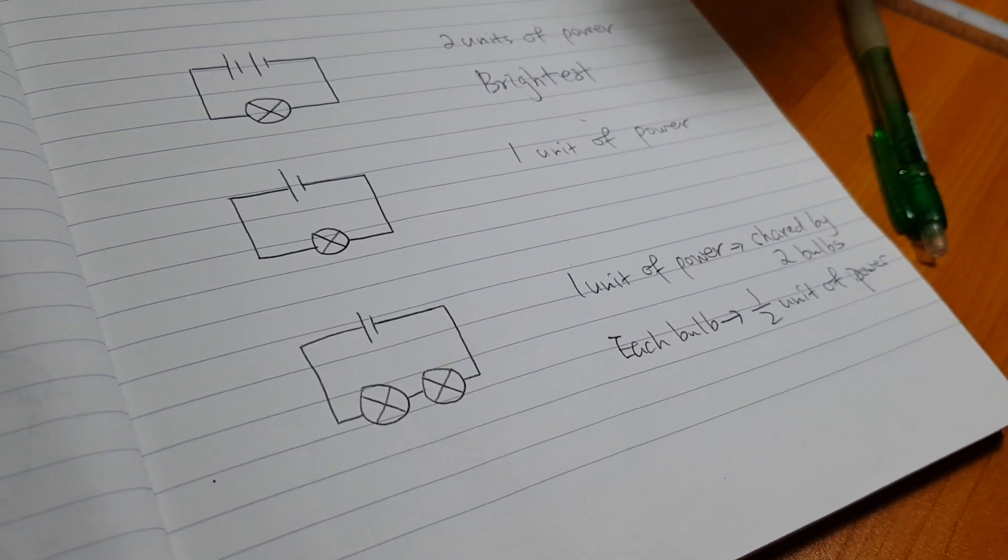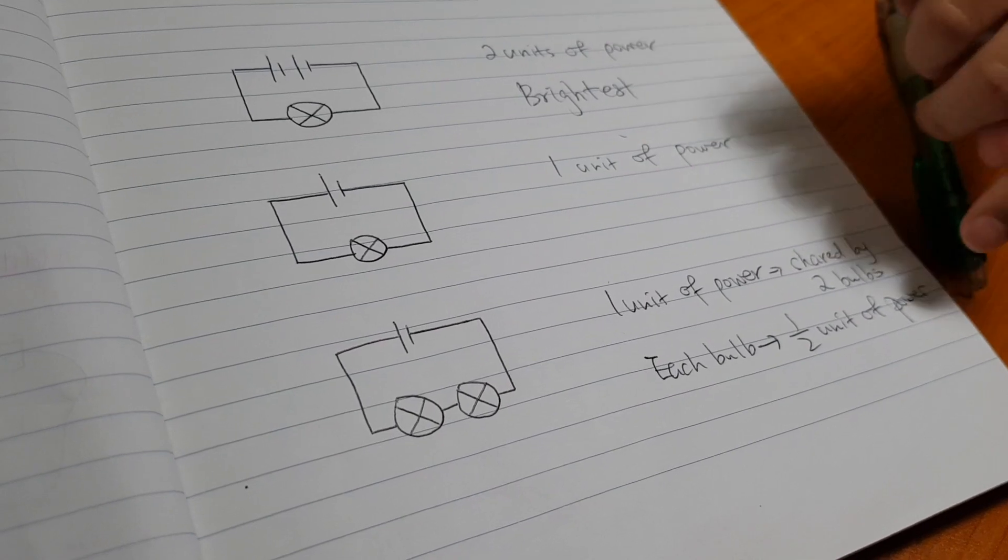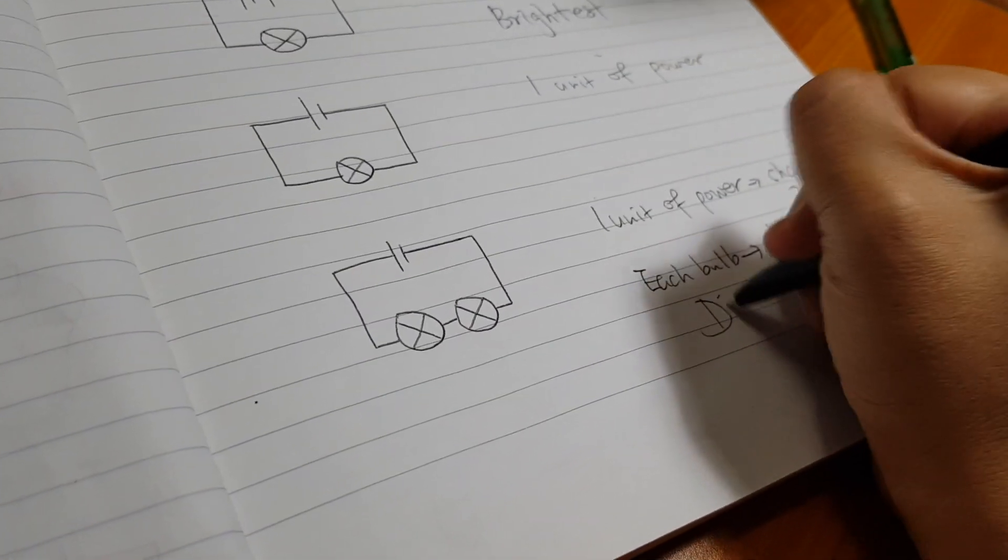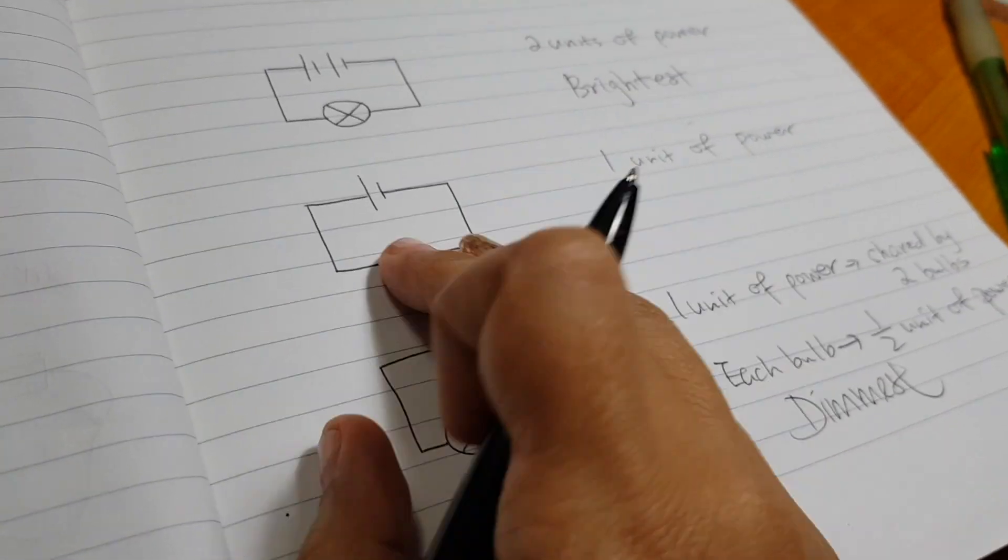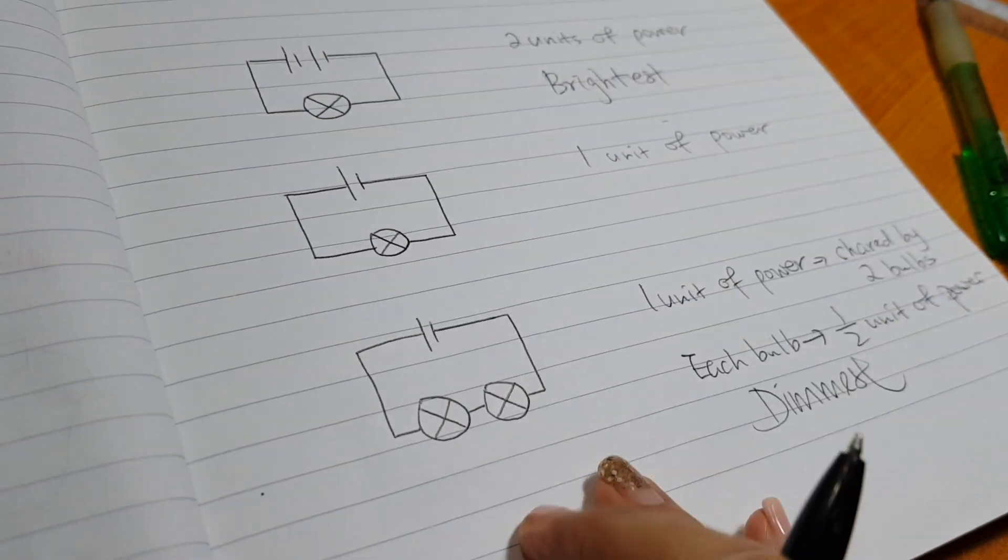Which one is the dimmest? Yes, so this is the dimmest. This is the middle one. This one has one unit. This one has more than one unit. This one has less than one unit. That's why this one is dimmest. This one is brighter. You understand?